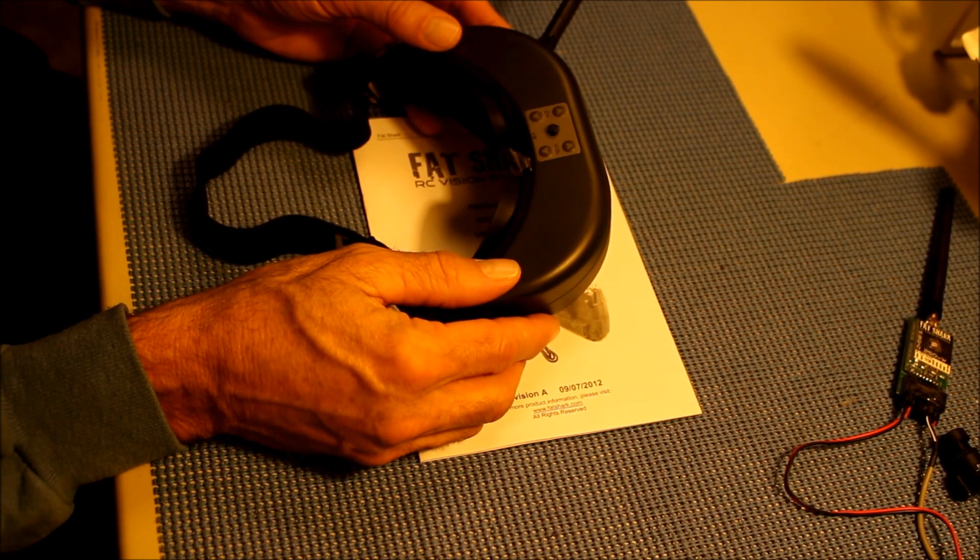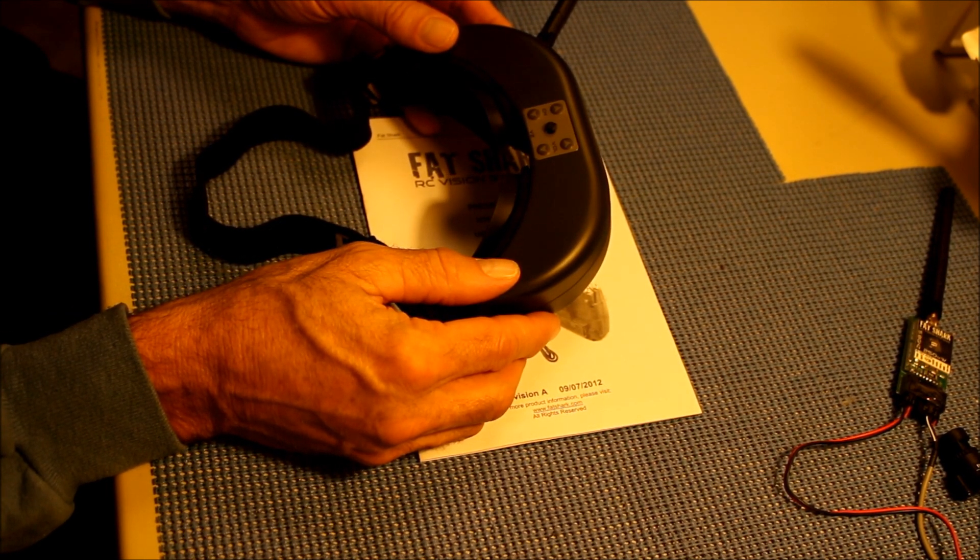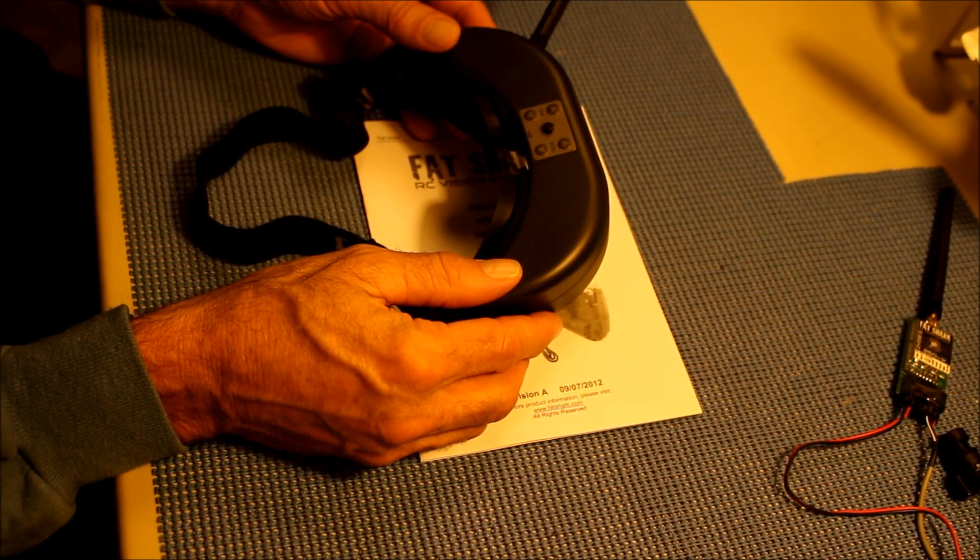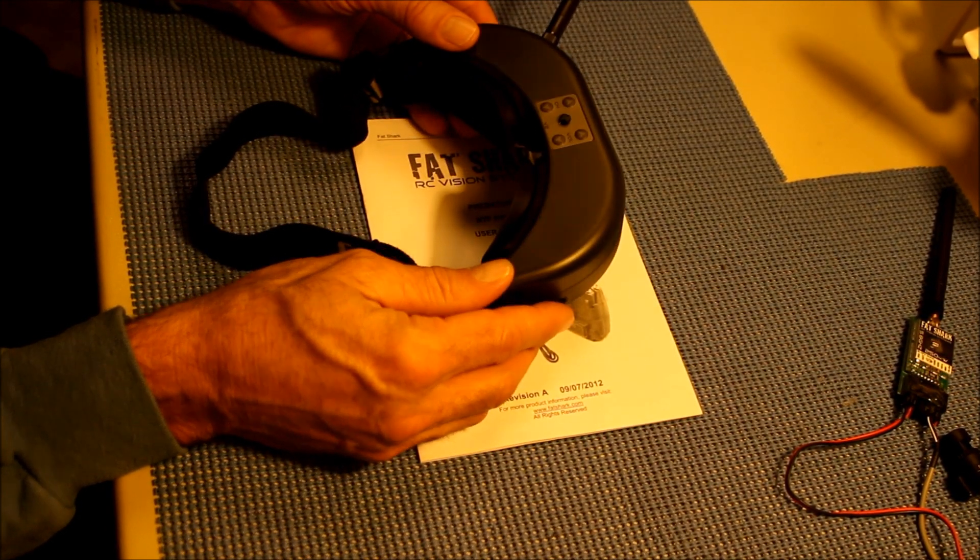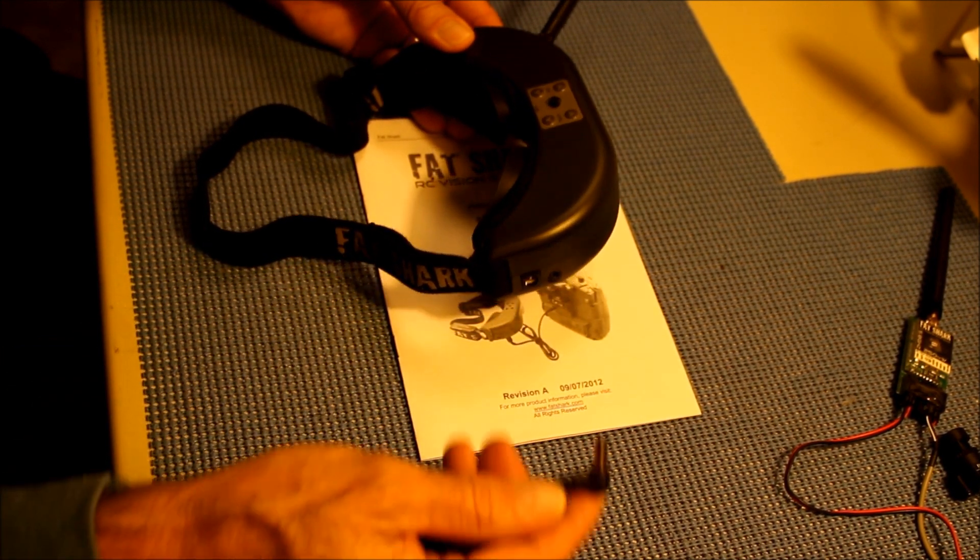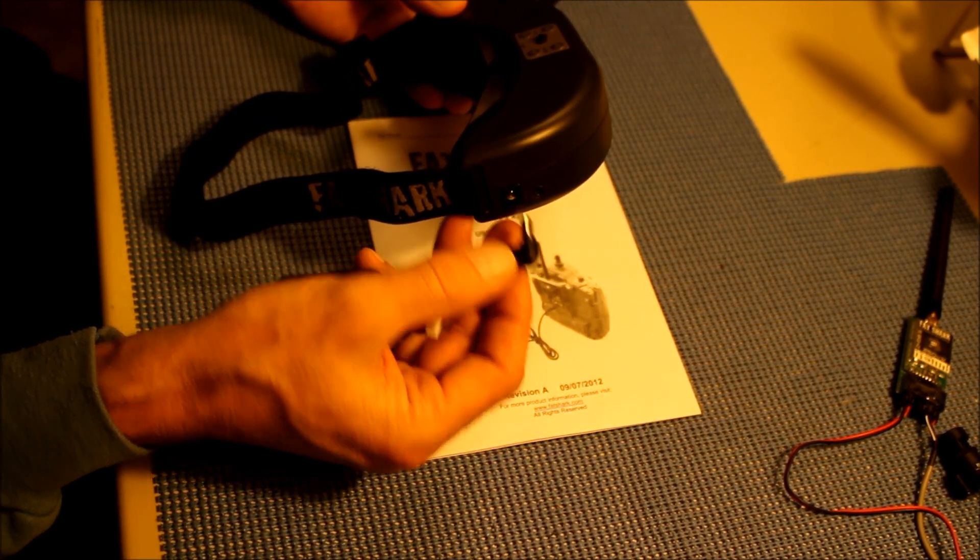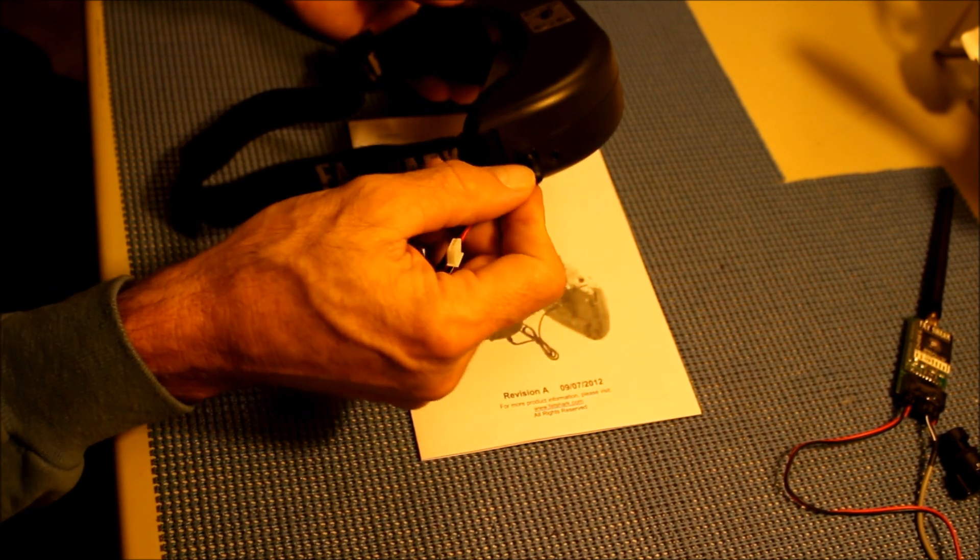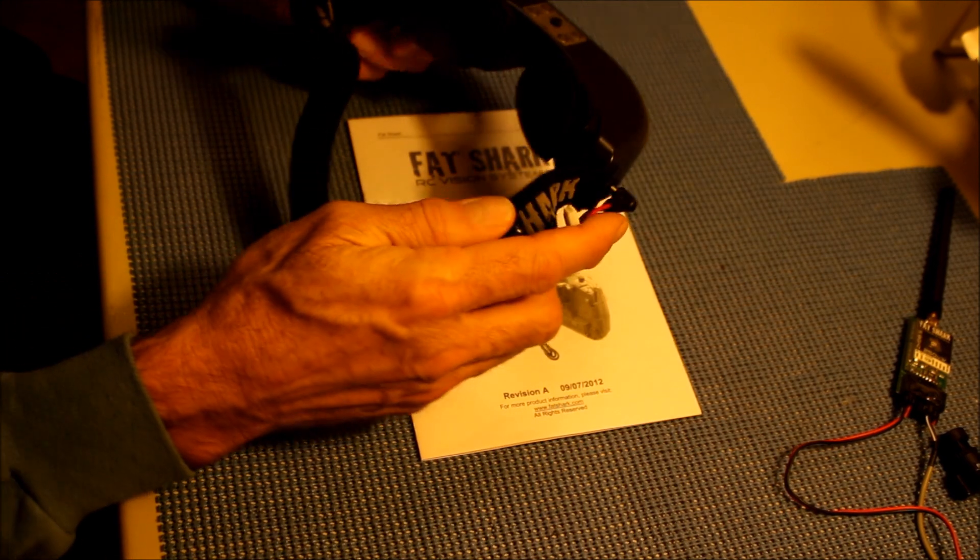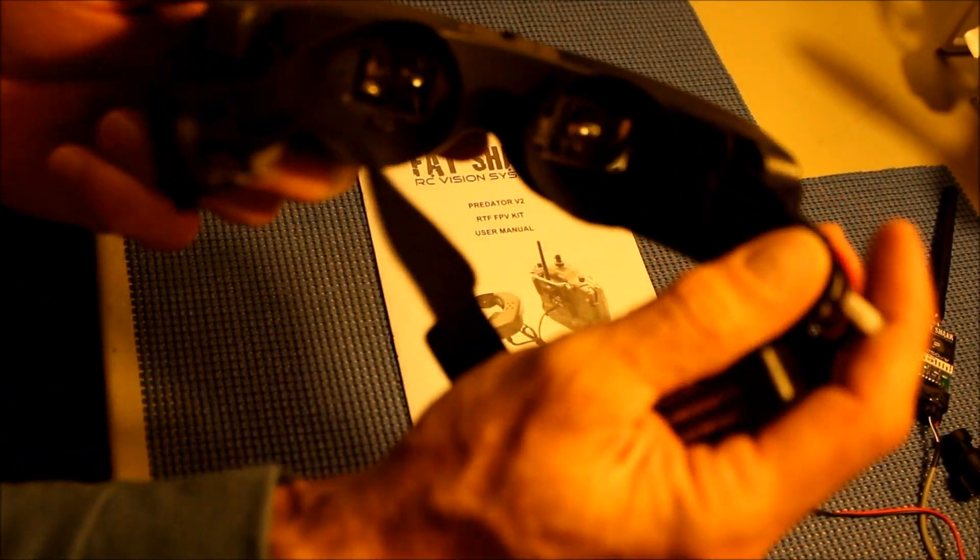These are the goggles that come with the Predator V2 and it comes with a battery pack that plugs into the side. You can attach the battery to the headband and with these goggles what you'll be doing is looking through each eyepiece.